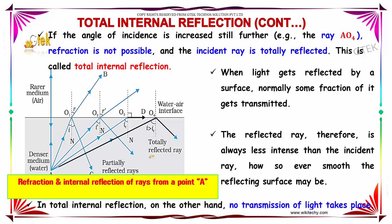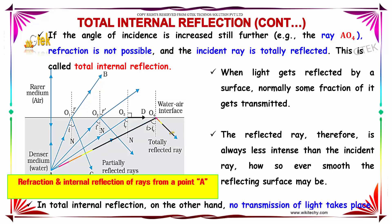When light gets reflected by a surface normally, some fraction of it gets transmitted. The reflected ray is therefore always less intense than the incident ray, however smooth the reflecting surface may be. In total internal reflection, on the other hand, no transmission of light takes place.